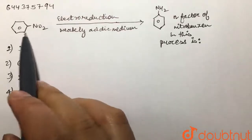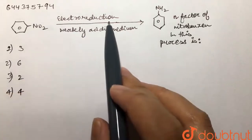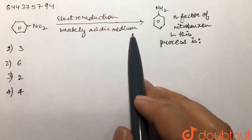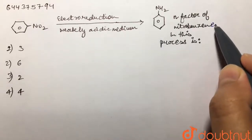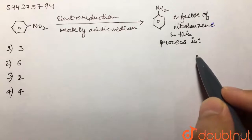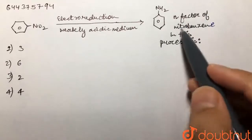this reaction: nitrobenzene by electroreduction in weakly acidic medium is forming aniline. The n-factor of nitrobenzene in this process is what we are supposed to find out.